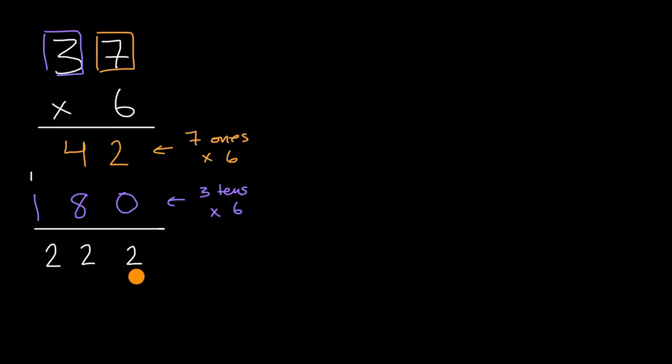What we'll try in this video is see what happens when we do two digits times two digits. So let's tackle 37 times 26. We're trying to figure out 37 twenty-sixes. Pause this video and see if you can tackle that using a similar method to what we used before.